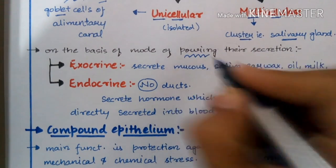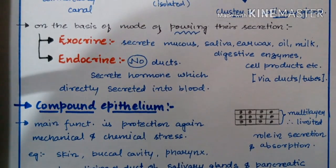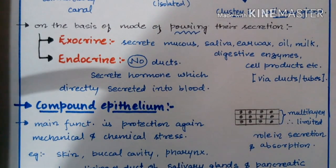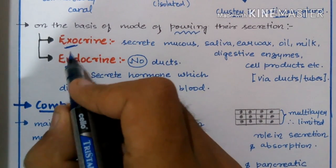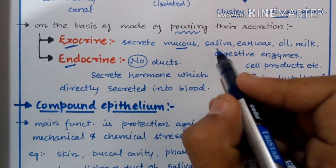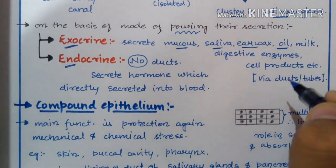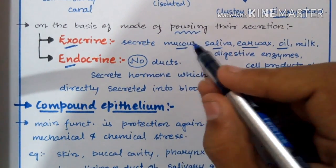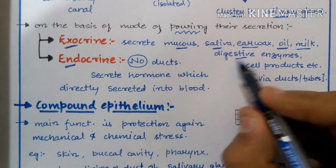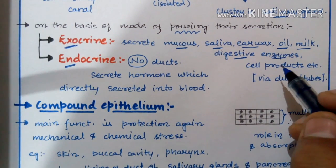On the basis of the mode of pouring their secretion — whether via ducts and tubules or directly into the blood — glands are divided into two types: exocrine glands and endocrine glands. Exocrine glands secrete most chemicals in our body such as mucus, saliva, earwax (cerumen), oil, and include sebaceous glands, sudorific glands, salivary glands, goblet cells, mammary glands, and digestive enzymes.